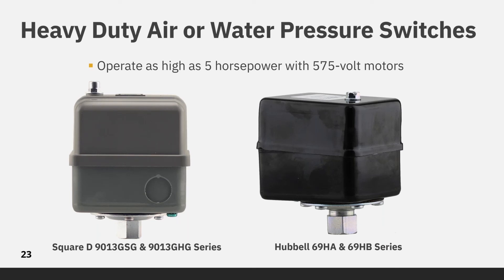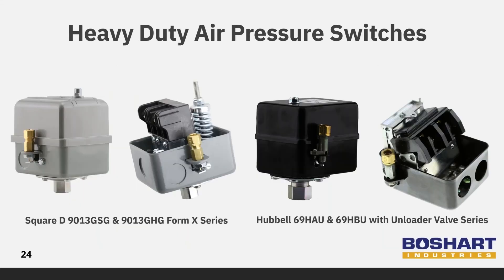Heavy duty air or water pressure switches are used with large pumps and commercial compressors up to 250 psi, 2 horsepower on 120 volt motors and up to 5 horsepower on 240 volt motors. They can operate as high as 5 horsepower with 575 volt motors. Heavy duty air pressure switches can also be equipped with unloader valves as previously mentioned.